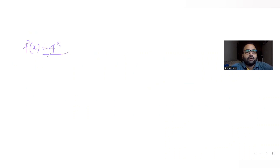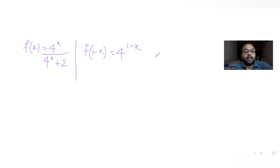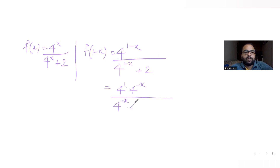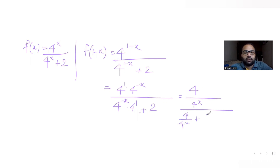We know f(x) = 4^x / (4^x + 2). To find f(1 - x), substitute (1 - x) for x: it becomes 4^(1-x) / (4^(1-x) + 2), which equals (4 · 4^(-x)) / (4 · 4^(-x) + 2), which simplifies to (4 / 4^x) / (4 / 4^x + 2). We can cancel the 4^x terms in numerator and denominator.